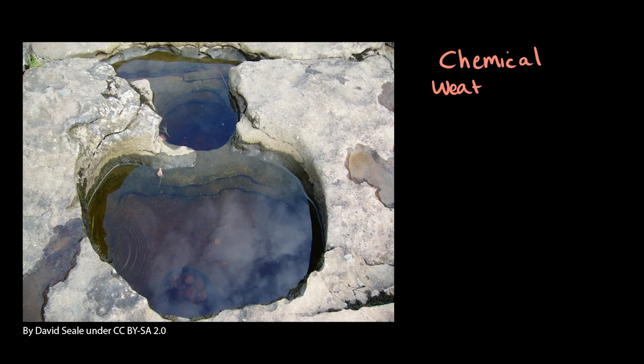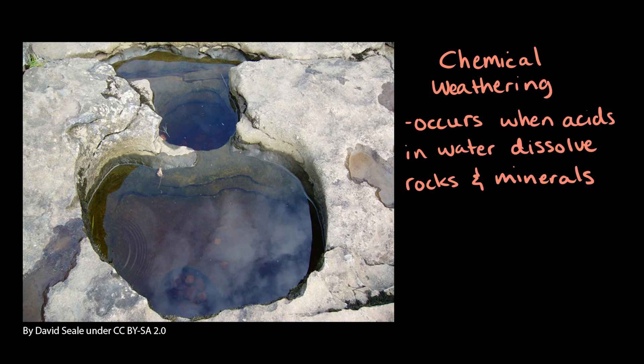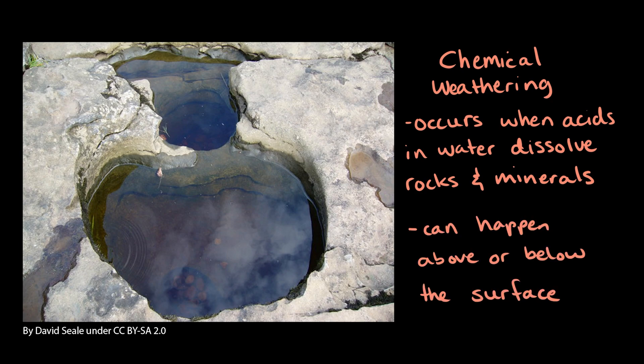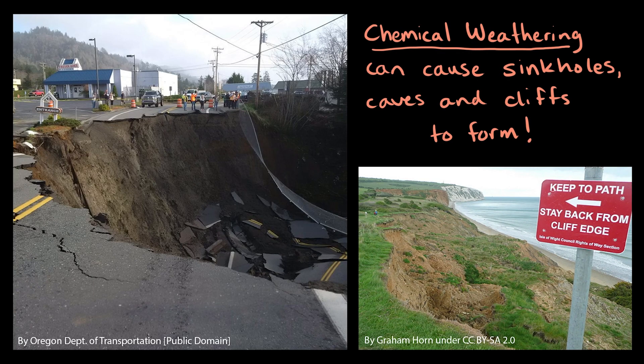Chemical weathering is another way that water can break rocks, such as when acids in water dissolve certain types of rocks and minerals. Over time, flowing water can dissolve the minerals in rocks on or under the surface. This chemical weathering can cause sinkholes, caves, and cliffs to form.